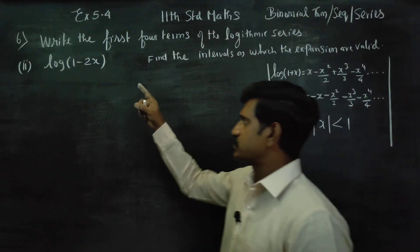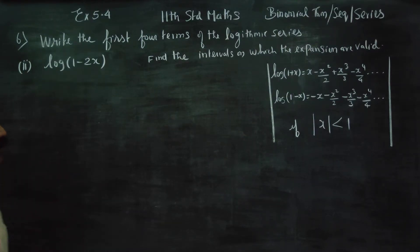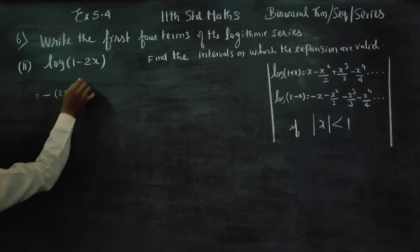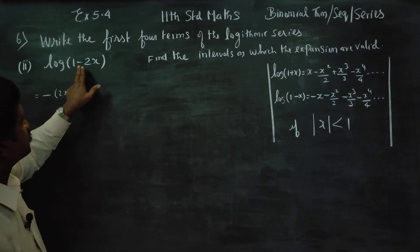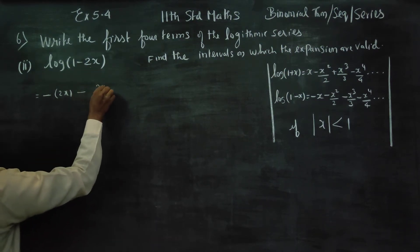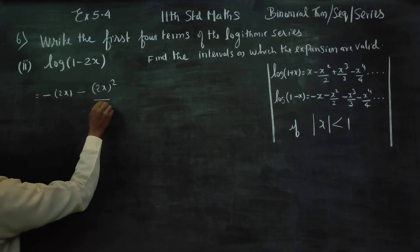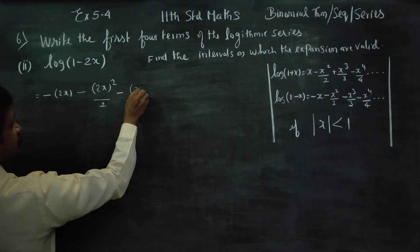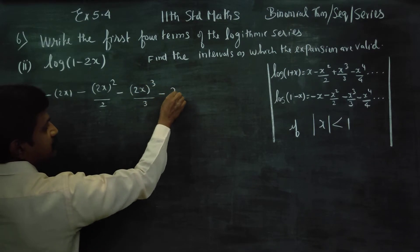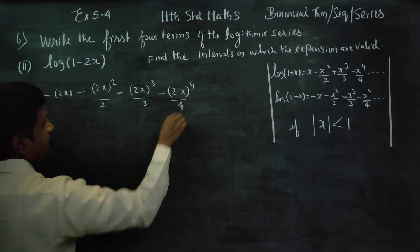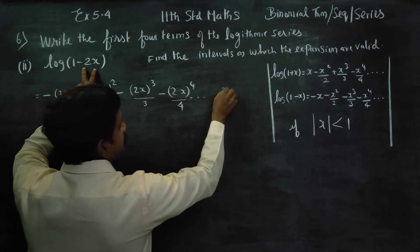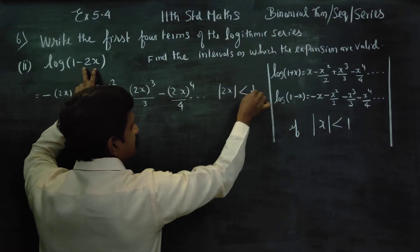Proceeding to the second subdivision: logarithm of (1 − 2x). This matches with the second formula for log(1 − x). Therefore we substitute x with 2x: minus 2x, minus (2x)² by 2, minus (2x)³ by 3, minus (2x)⁴ by 4, and it goes on. This expansion works if the absolute value of 2x is less than 1.